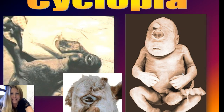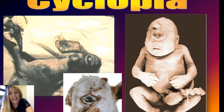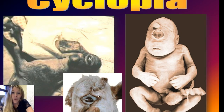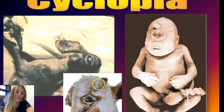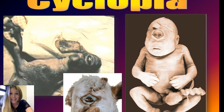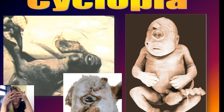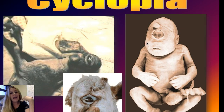Some other evidence for macroevolution comes from molecular evidence, where you can see the same genes in a human, a goat, a cow, a dog, and produce the same kinds of genetic deformities across different species because they're based on the same malfunctioning genes. For example, there's a gene mutation that codes for a disease called cyclopia, where basically the eyes have fused into one area.